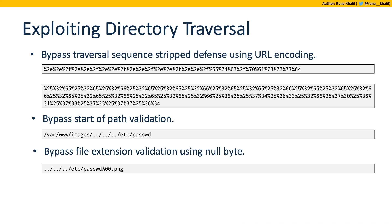Other bypass techniques include URL encoding or double encoding the payload, and using non-standard encoding to bypass defense mechanisms. If the application requires the parameter to start with a specific path like /var/www/images, keep that path in the parameter and append your traversal payload. If the application requires a specific file extension, you can use the null byte (represented as %00 in hex) to tell the application to ignore everything after it — though this requires the framework to support null byte processing.